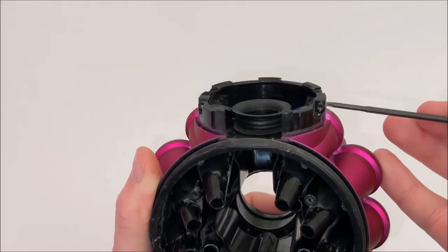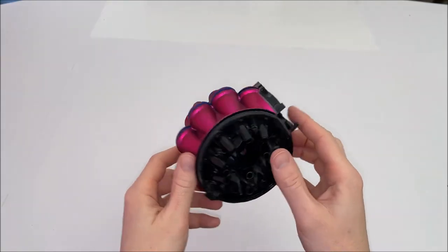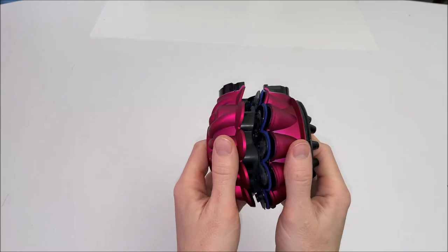Only two screws are holding the assembly together now. Remove both and set aside. Now the head unit can be split. Pull both halves apart as seen here.